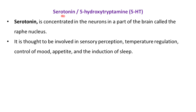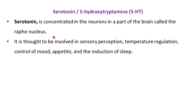Serotonin, also called 5-hydroxytryptamine, is concentrated in neurons in a part of the brain called the raphe nucleus. It is thought to be involved in sensory perception, temperature regulation, control of mood, appetite, and induction of sleep.